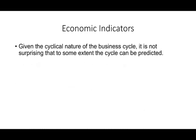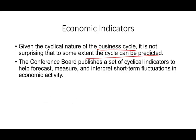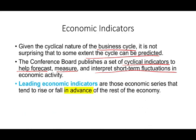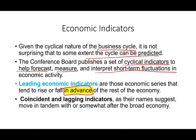Because the economy reaches peaks and troughs, it's important to predict them. We look at what are called economic indicators. The Conference Board publishes a set of cyclical indicators to help forecast, measure, and interpret short-term fluctuations in economic activity. We have three types: leading indicators — in my opinion the most important — which are economic series that tend to rise or fall in advance. We also have coincident and lagging indicators, which as their names suggest, move in tandem with or after the economy has gone through the cycle.